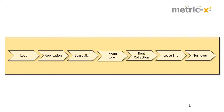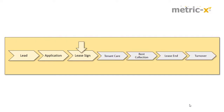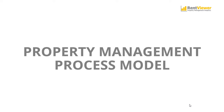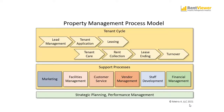If there is a bottleneck in one aspect of the business, it is helpful to have a diagram on which we can pinpoint the bottleneck. This will help us identify what else is affected. And that is what the property management process model is for — the process model provides us a visual framework to explain how work gets done in a property management company.